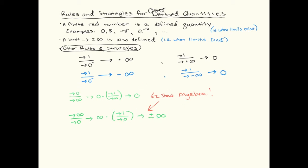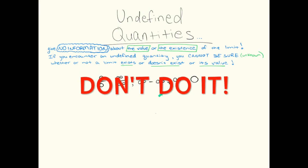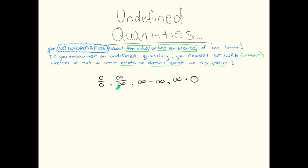Undefined quantities include 0 over 0, infinity over infinity, infinity minus infinity, and infinity times 0. The most common type of mistake you see with these is students canceling. 0 divided by 0, 0 cancels to give me 1 or something like that, or canceling the infinities. The problem with these quantities is that they don't have any meaning. Infinity divided by infinity doesn't make any sense. These are also known as nonsense. No information. Undefined.